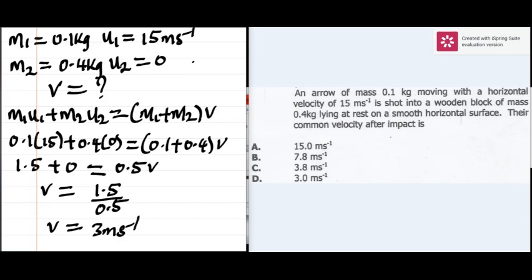So the common velocity is 3 meters per second. The velocity at which the arrow embedded in the block move together is 3 meters per second.